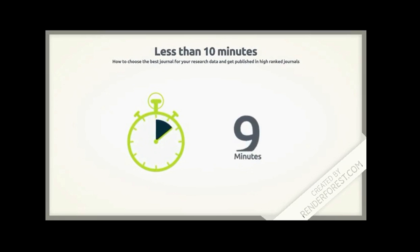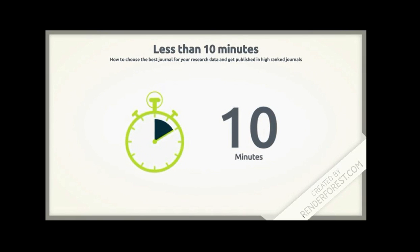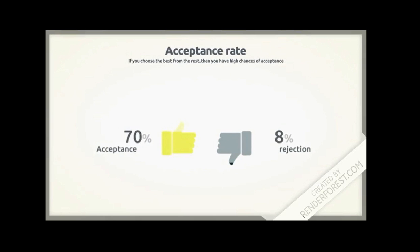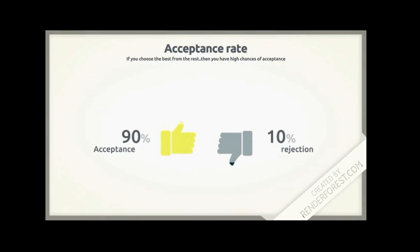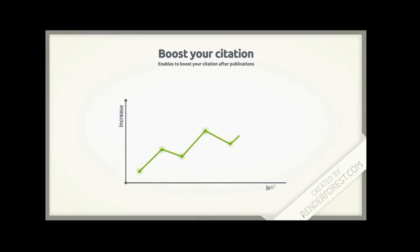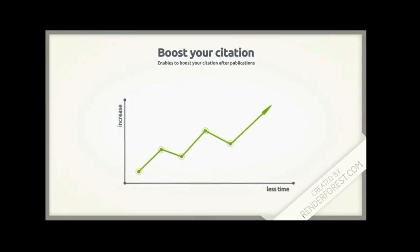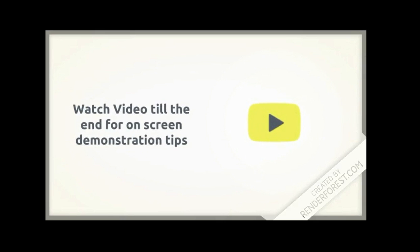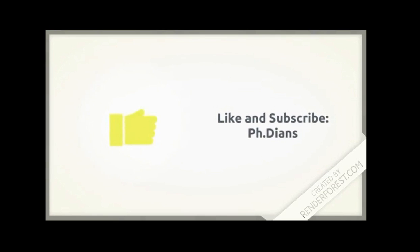With just less than 10 minutes, you will be able to choose the best journal to target and get published in some of the reputed high-ranked journals. These tips enable you to increase your acceptance rate and boost your citation score. It not only helps you target the suitable journal but also boosts your citation score. Watch the video till the end for on-screen demonstration tips.